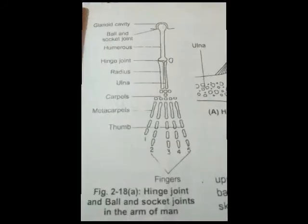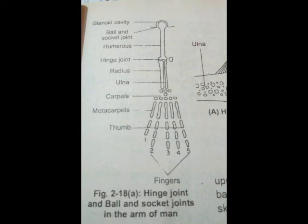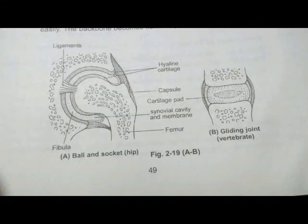Joints are the points where two bones meet together. There are two types of joints. First, Hinge joints — these joints can move in one plane or one direction, such as knee joints and elbow joints. Second, Ball and socket joints — these joints move in all directions, such as shoulder joints and hip joints. Ball and socket joints move universally.